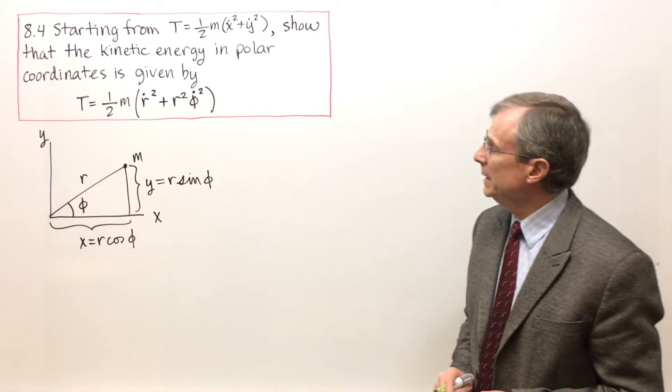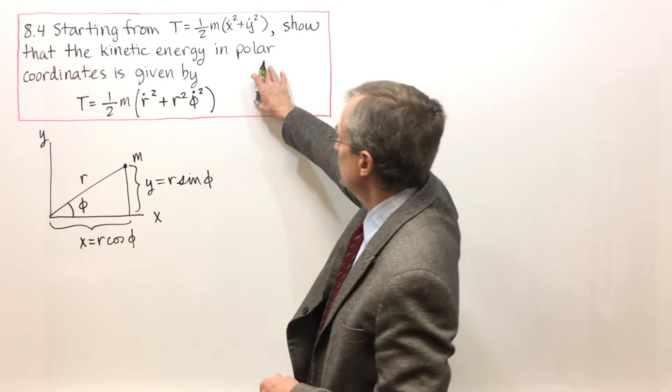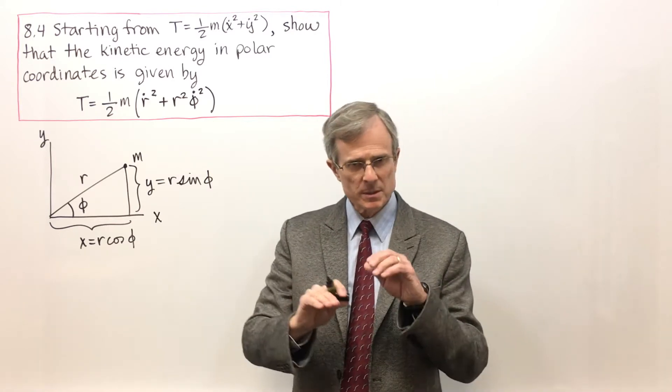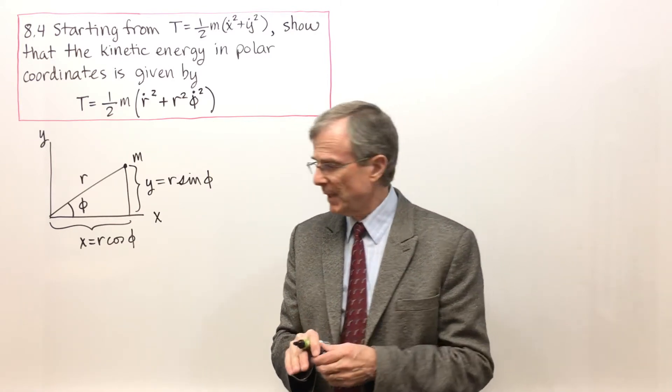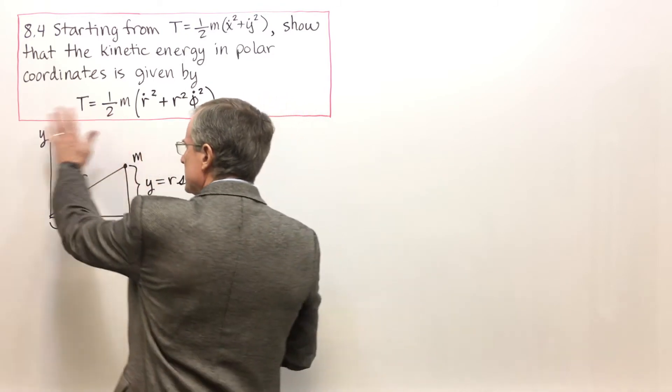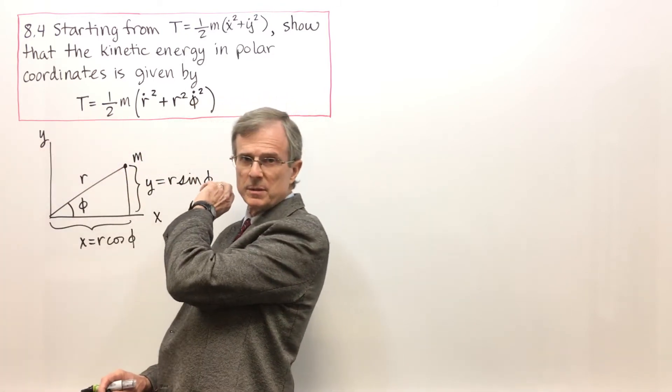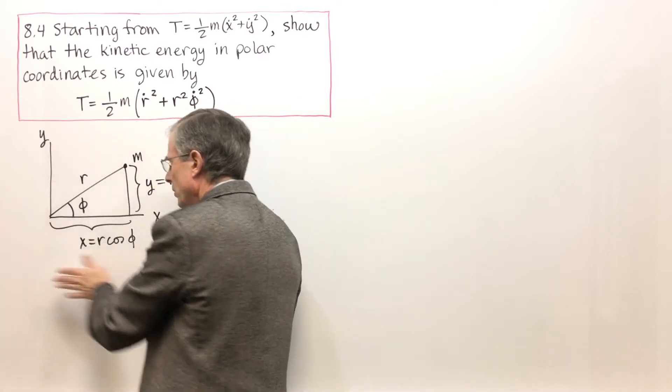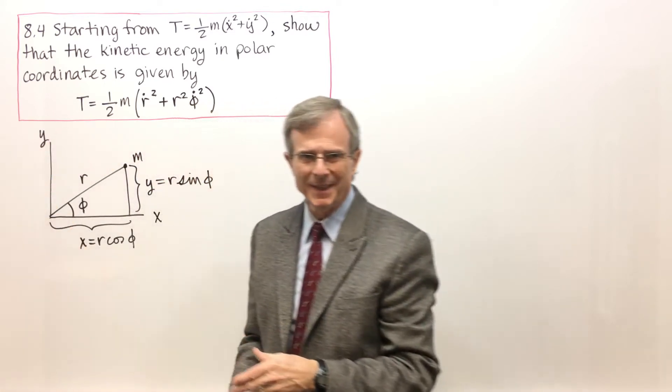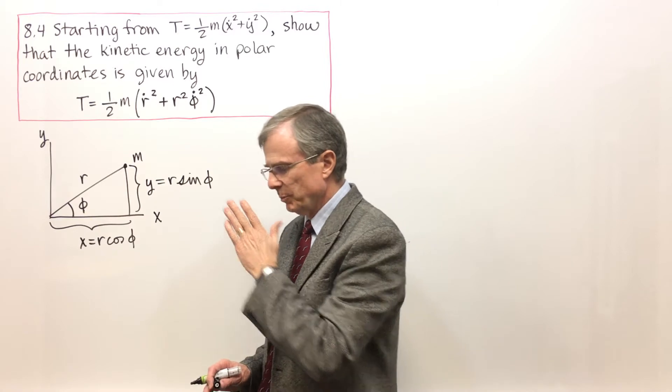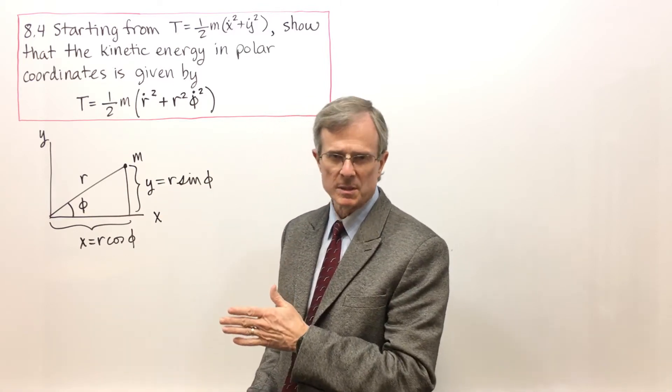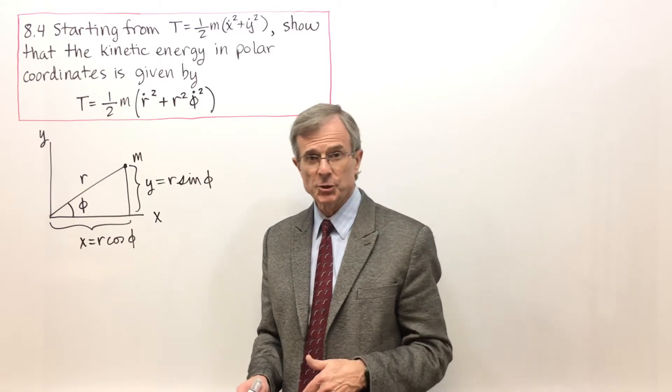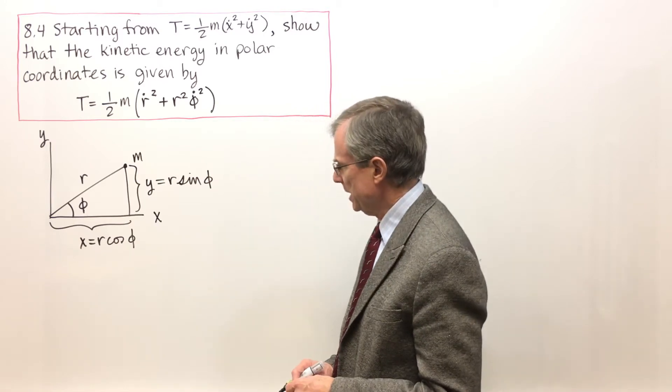Now we're interested in finding the kinetic energy in polar coordinates, so the reason polar coordinates is useful is that if the mass, if the earth is mass m and the sun is at the origin, then the earth is going to be moving in a plane. The plane of motion of the earth includes the sun, and for one of your exercises you will actually show that it will stay in a plane.